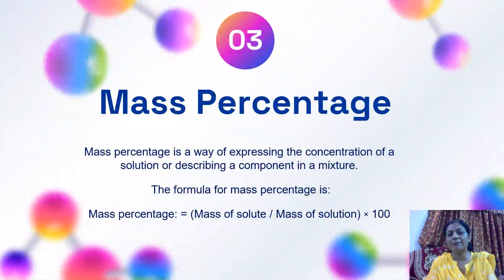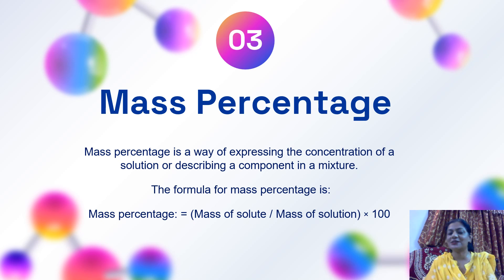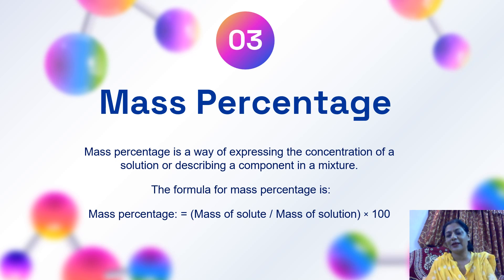Now we are ready with mass percentage. Just as we calculate the percentage of marks obtained by a student — marks obtained divided by total marks multiplied by 100 — mass percentage is the mass of the solute divided by the mass of the solution, multiplied by 100.